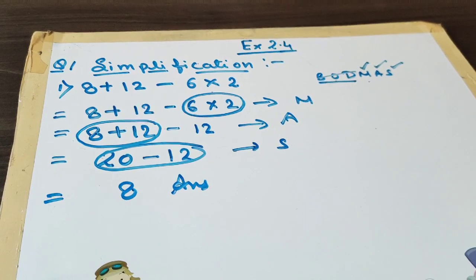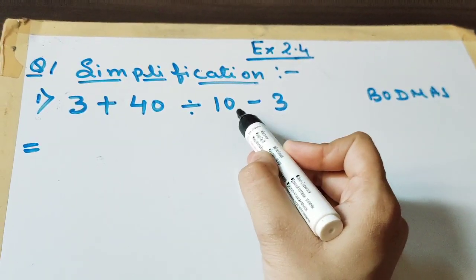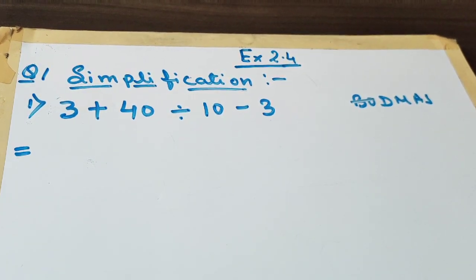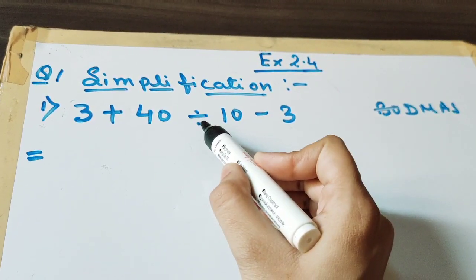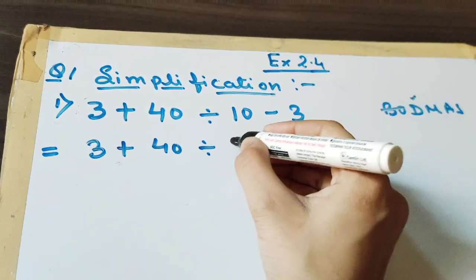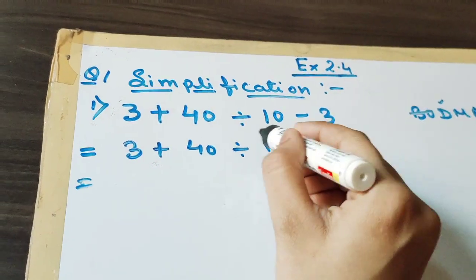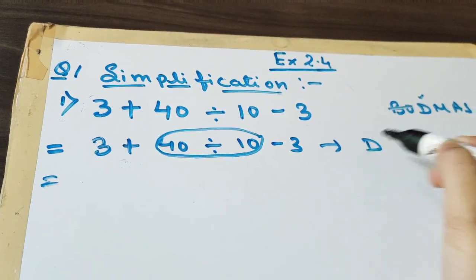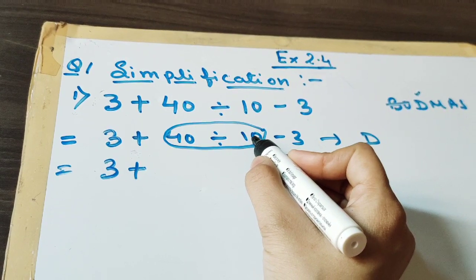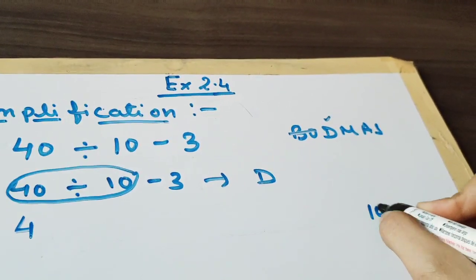Now the next question: 3 plus 40 divided by 10 minus 3. There is no bracket, so we will ignore that step. First we can see there is a division sign, so we have to divide first. We will write down the numbers as they are with their signs. Next step: 40 divided by 10 gives us 4.